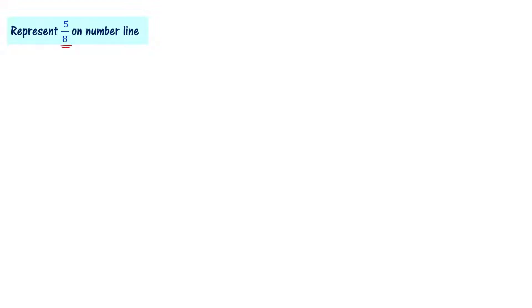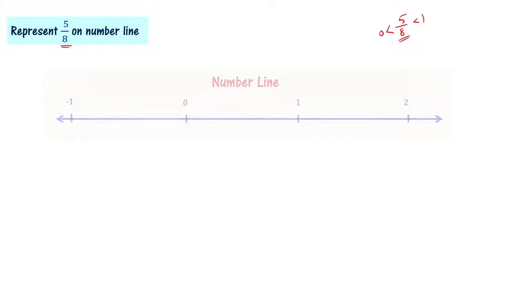Let's represent 5/8 on a number line. 5/8 is a rational number because it is the ratio of two integers, 5 and 8. On the number line, 5/8 is smaller than 1 and greater than 0, so its position is in between 0 and 1.